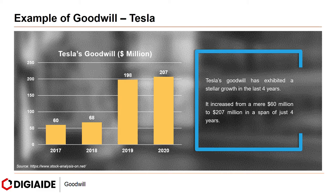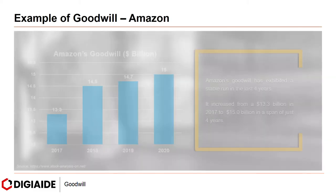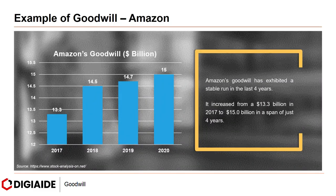Tesla's goodwill has exhibited stellar growth in the last four years, increasing from a mere $60 million in 2017 to about $207 million in 2020. Amazon's goodwill has exhibited a stable run in the last four years, increasing from $13.3 billion in 2017 to $15.4 billion in just four years.